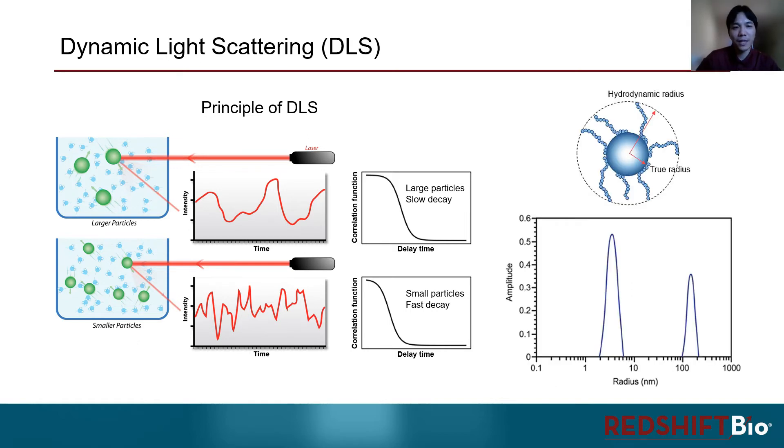With the calculated hydrodynamic size of the particles, DLS usually outputs the size distribution of all the particles in the sample. Overall, DLS is a great tool that provides fast measurements of the exact size of your samples, and can easily pick up large size disparities in your samples, such as protein aggregates.